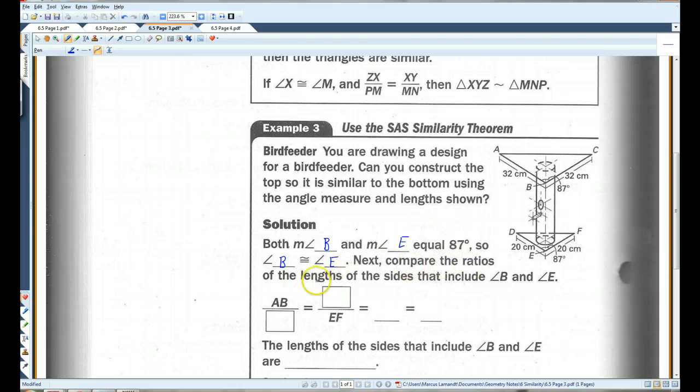Now, we're going to compare the ratios of the lengths of the sides that include angle B and angle E. These sides would be AB and DE—that's this side and this side. BC and EF—that's this side and this side. Now, we actually are given the measures of each of these sides. AB is 32, DE is 20, BC is 8.